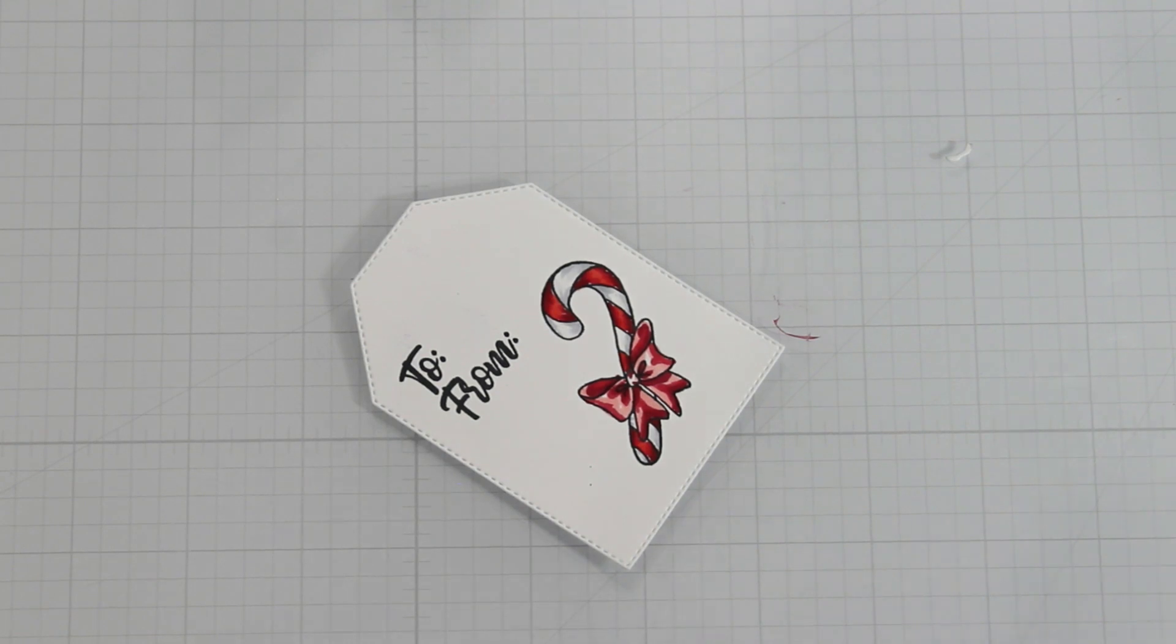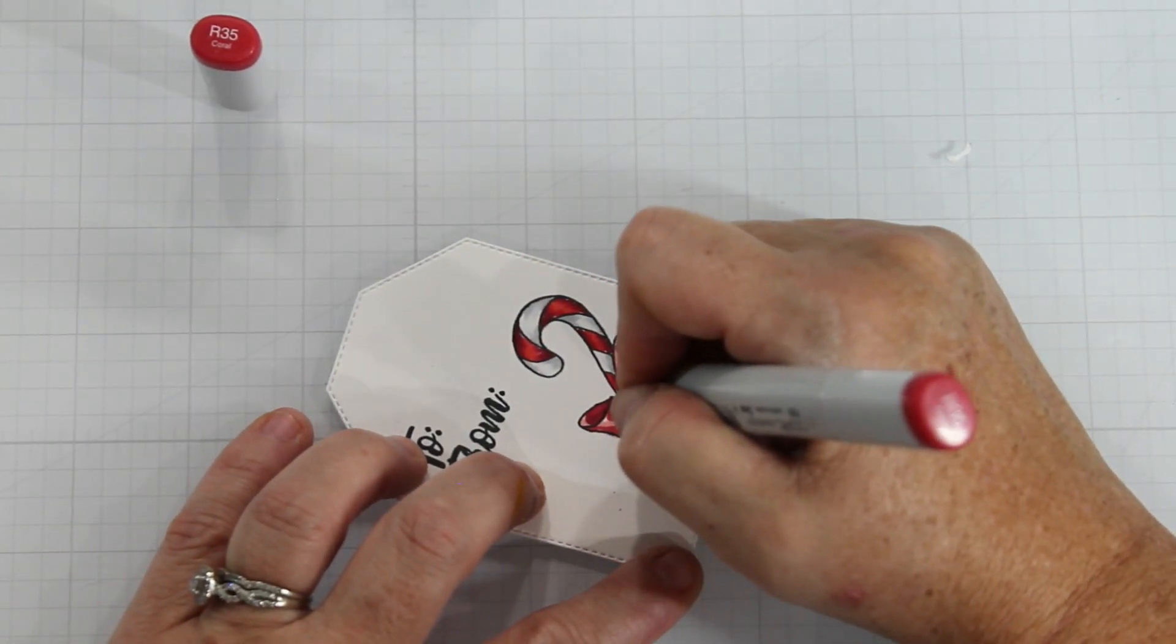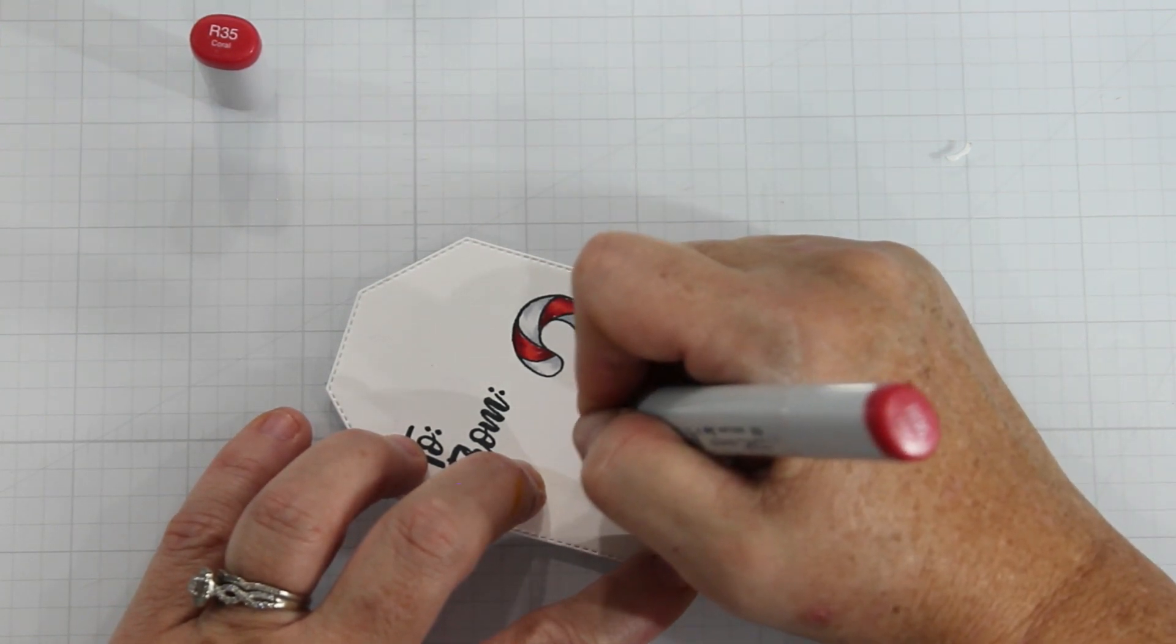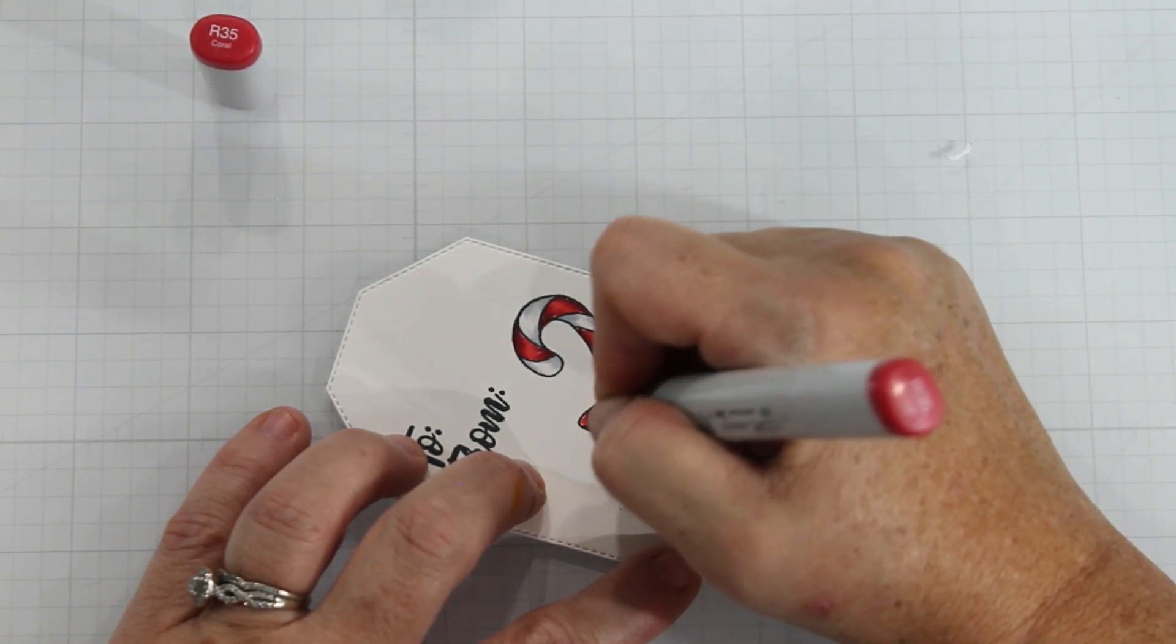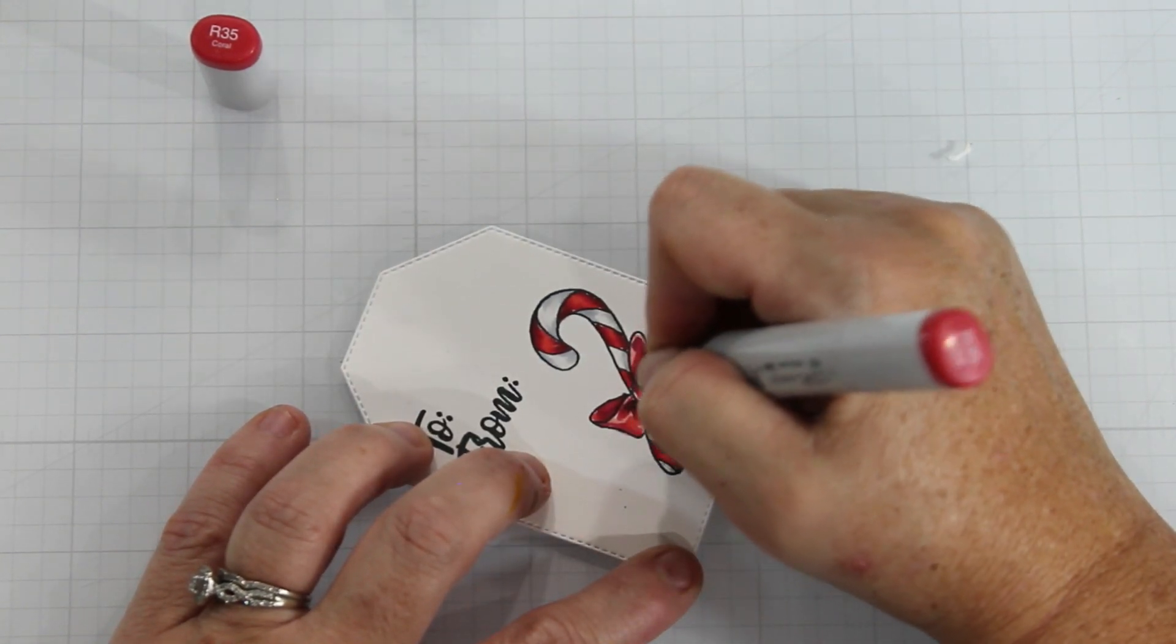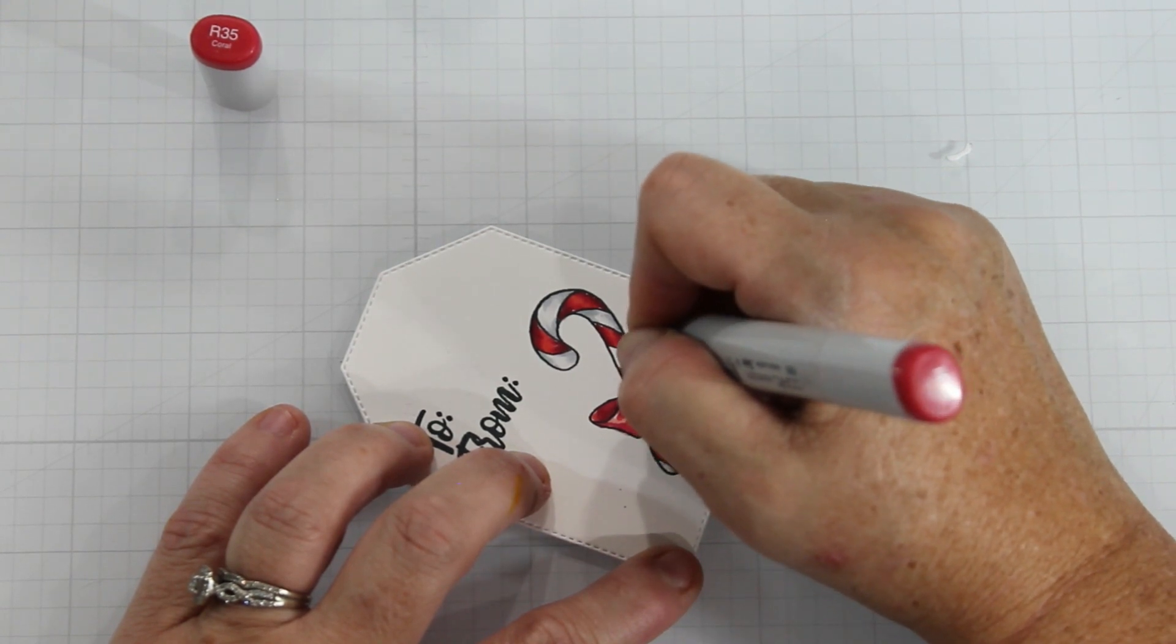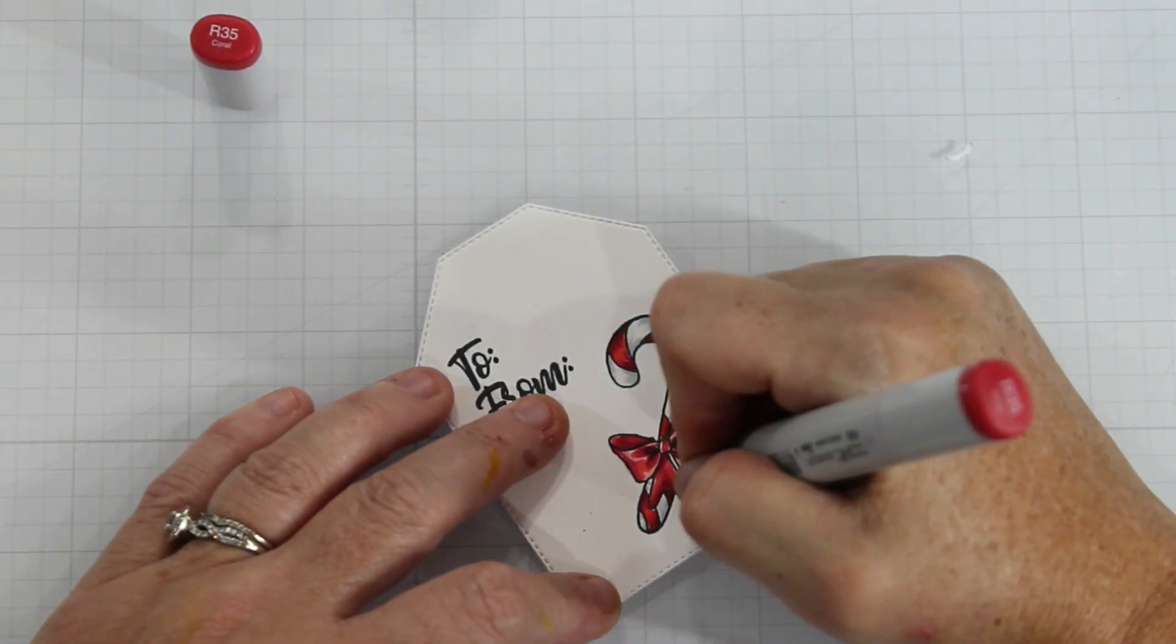And then from there I bring in my R35 marker which is going to be my main color or my mid-tone and I start to extend those shadows and color in the majority of the bow because that is what your eye is going to see the most of is the R35 because it's your main color.